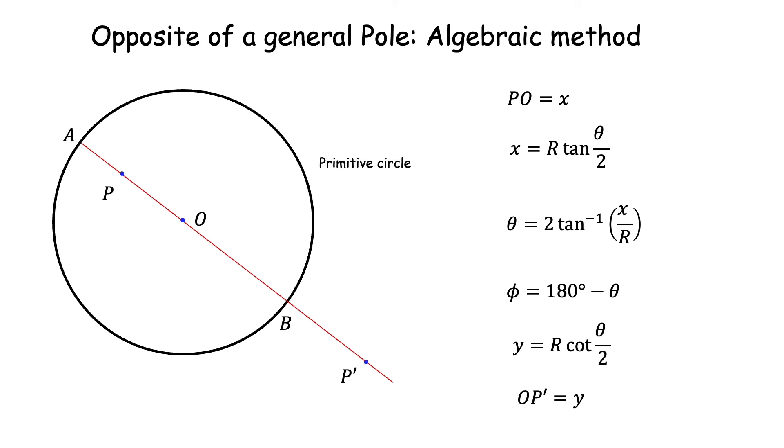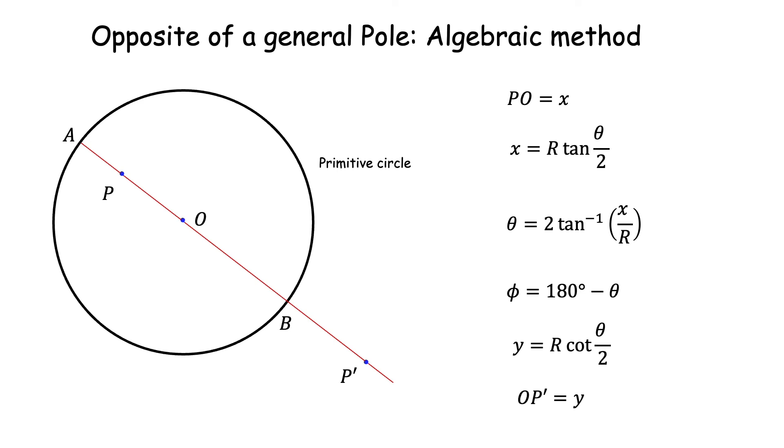If the pole P happens to lie on the primitive itself, then you are lucky. You don't need any of those construction or analysis. All that you need is to draw the diameter through P, the diametrically opposite point P' is the opposite pole of P. This is simple to see because P lying on the primitive is a horizontal direction. Opposite direction will also be a horizontal and thus will lie on the primitive.